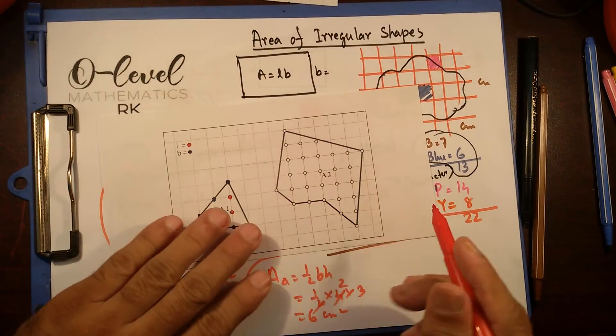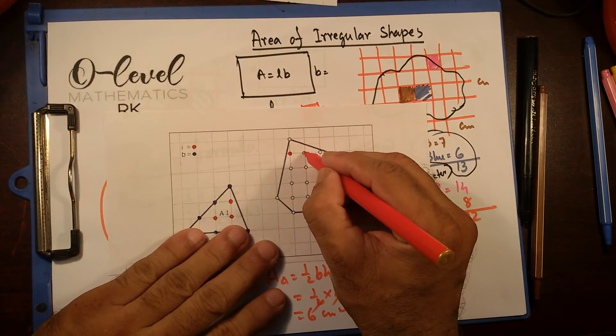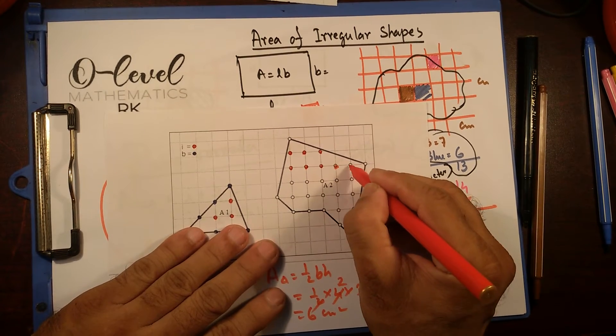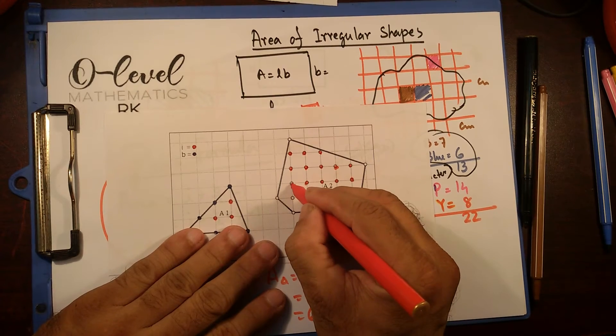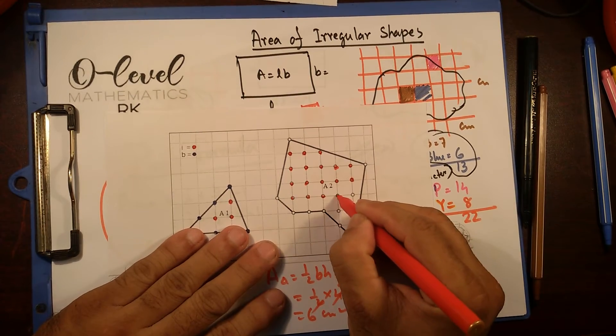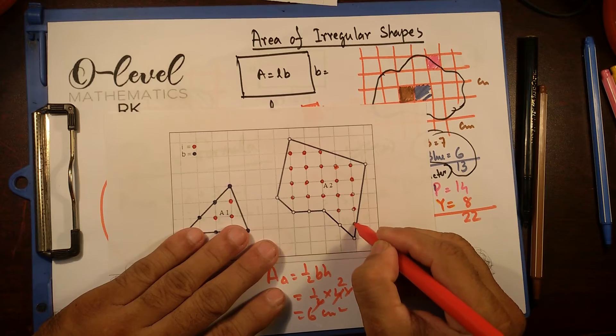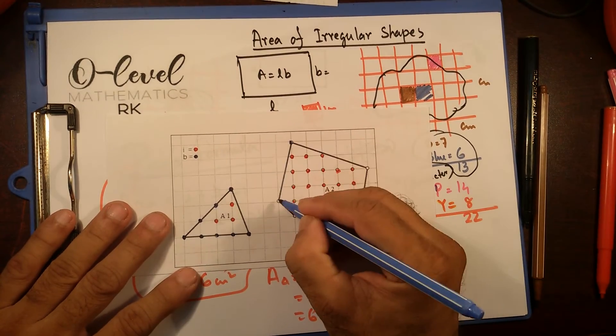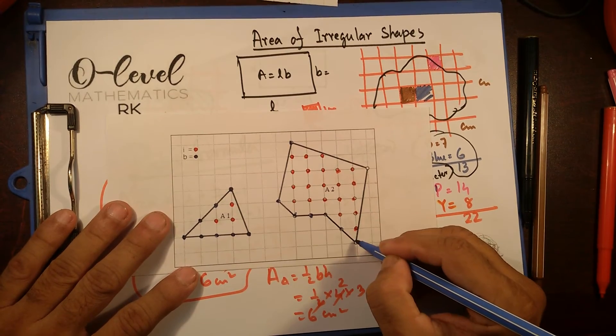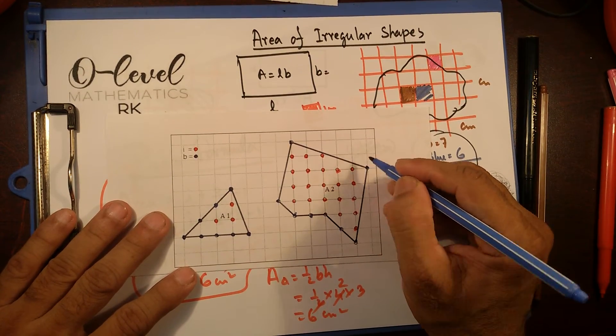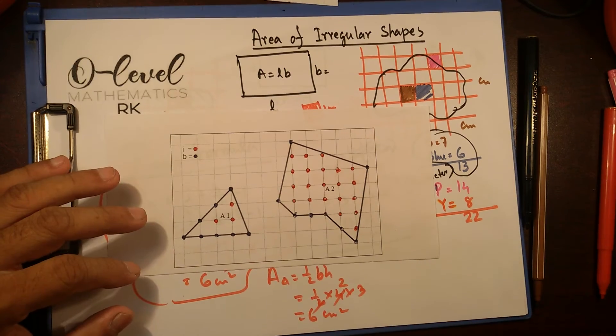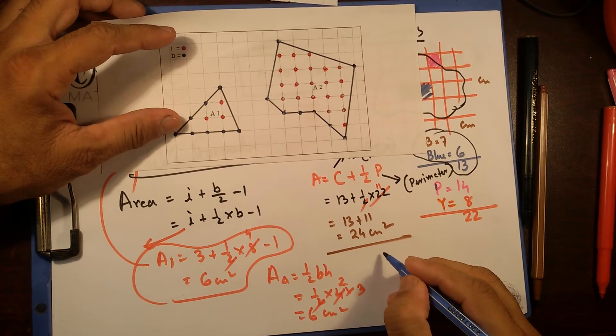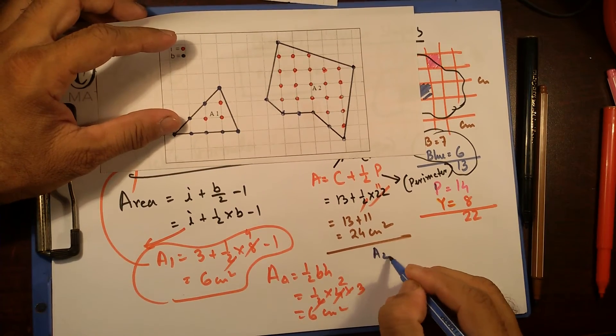Let's see if it works for this one or not. Red ones, inner points, I'm going to mark it with red. And then with blue. Now area 2.